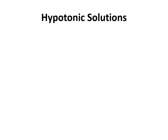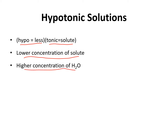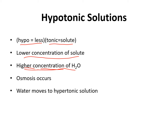Like comparing height — if two people are not the same height, one must be taller and one must be shorter. Hypo means less, like hypothermia means a person's body temperature is lower than normal. The hypotonic solution is the one with the lower concentration of solute, which means it has the higher concentration of water. So now you have a concentration gradient — one solution has a higher concentration of water than the other — and you will get osmosis. Water is going to move out of the hypotonic solution to the hypertonic solution.